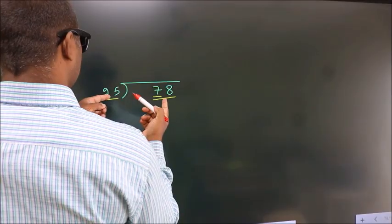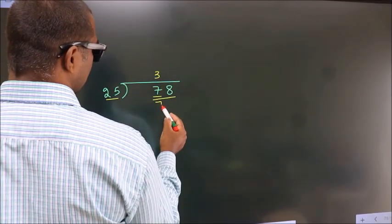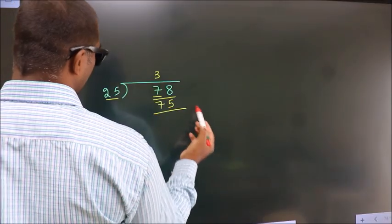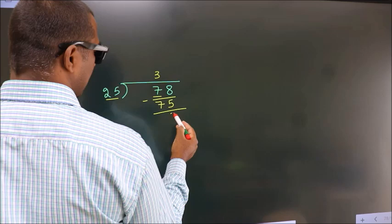In the 25 table is 25 threes, 75. Now we subtract, we get 3.